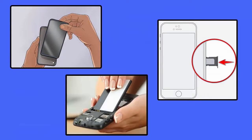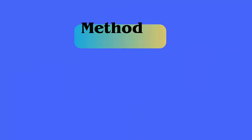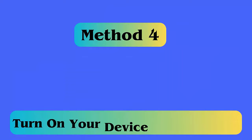Method 3: Take away the phone case, battery, and SIM card. Sometimes we need to remove the phone case, battery, and SIM card to solve problems like horizontal lines on the Samsung phone screen. This is an effective way to tackle the issue.